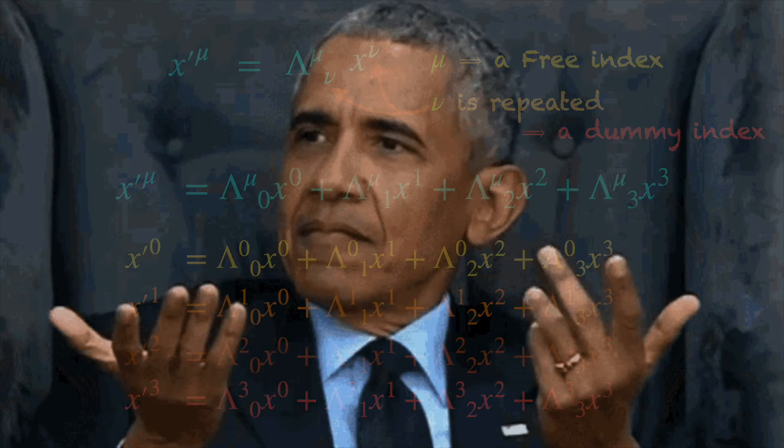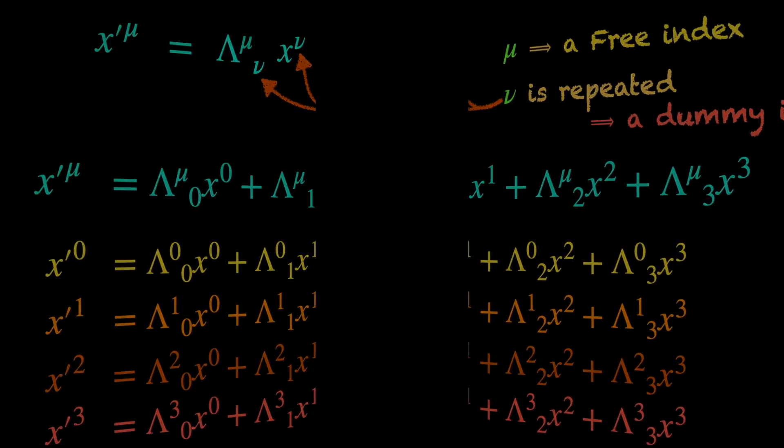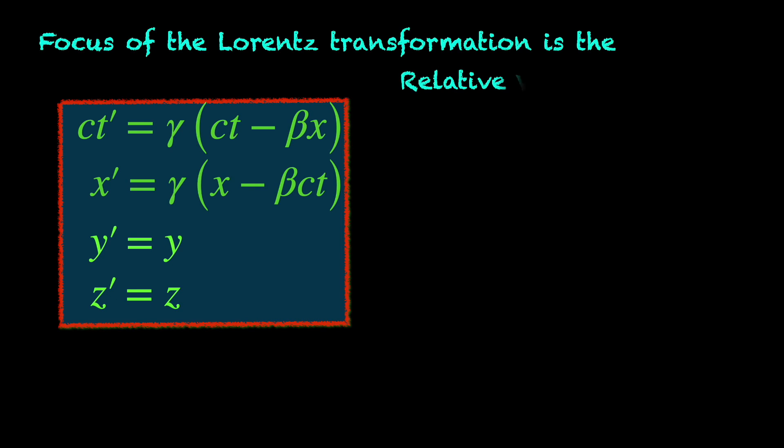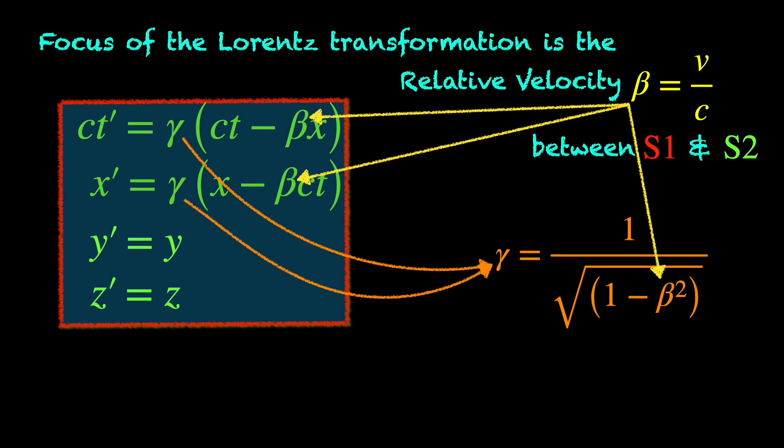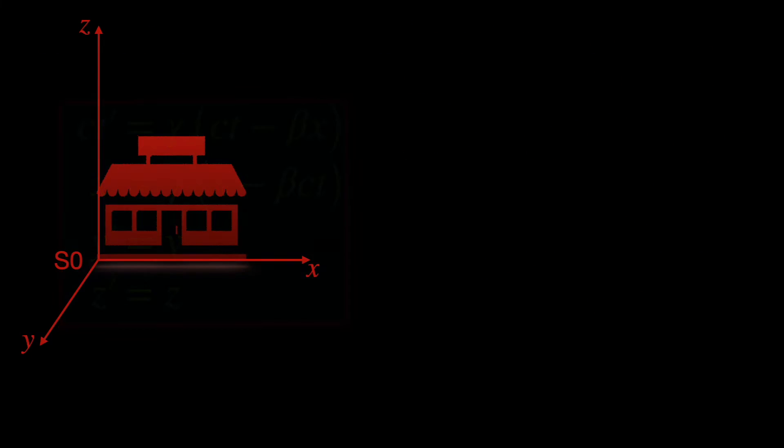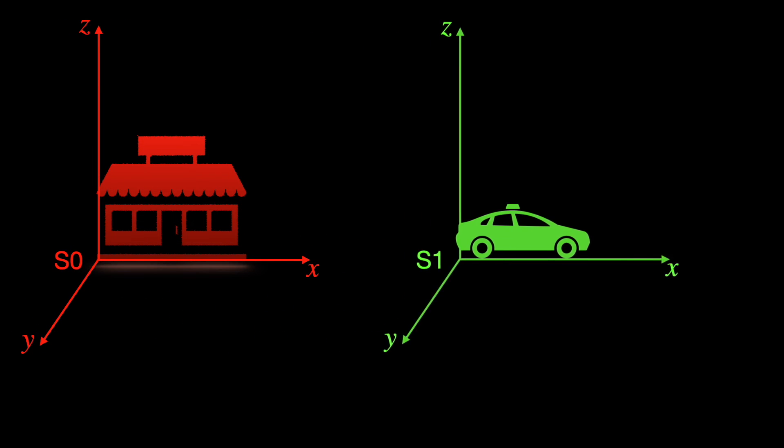But why do we bother with this matrix thingy? We were doing just fine with the four equations as they were, didn't we? Not really. See, the main ingredient in a Lorentz transformation is the relative velocity between the two inertial frames s1 and s2. In this video, we have taken this relative velocity along the x direction, but that is just one example.